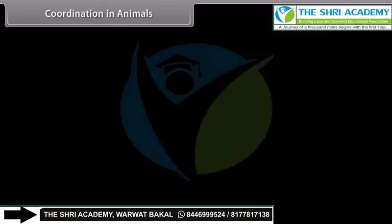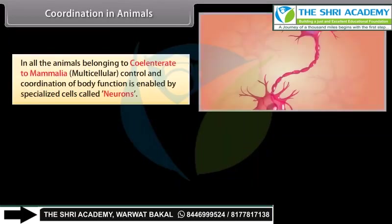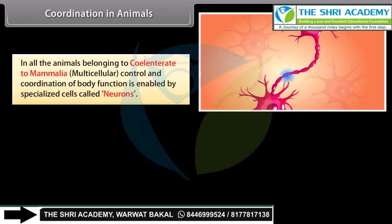In all animals belonging to coelenterates to mammalia, multicellular control and coordination of body function is enabled by specialized cells called neurons.